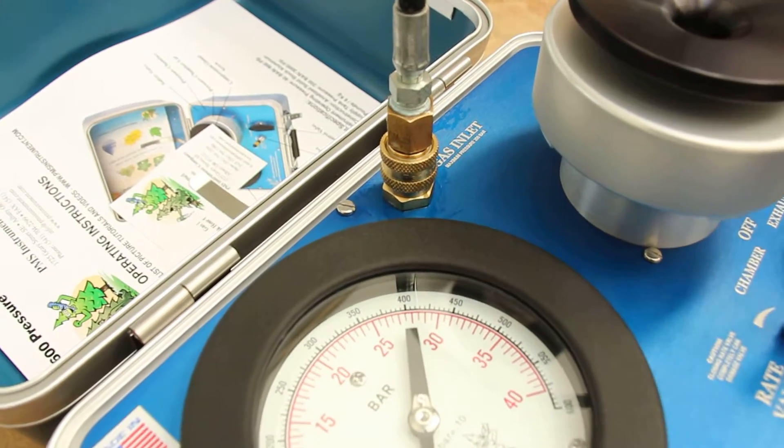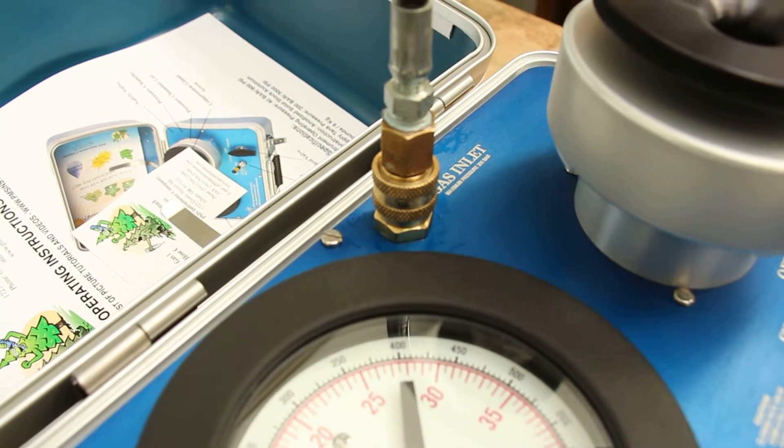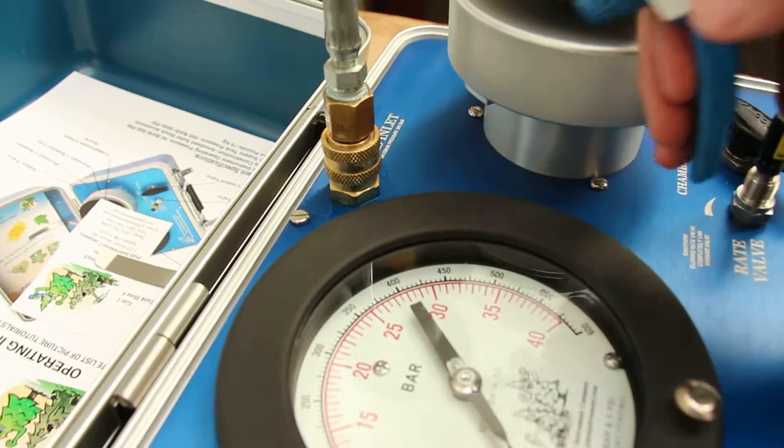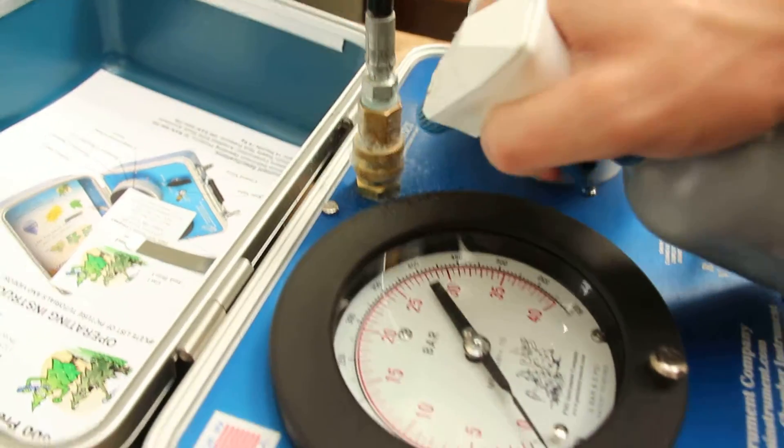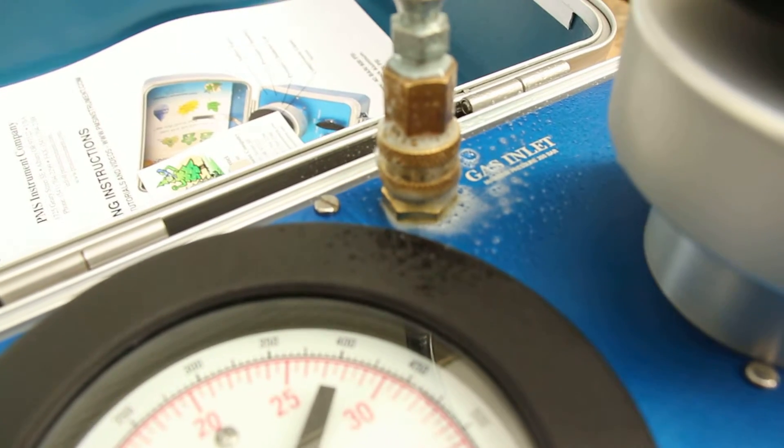How much pressure do we have on it? 2,000. 2,000 pounds there, so you can see now that we've got no bubbling. You can squirt a little more bubble leak detector on there. And you can see perfectly, no bubbles with leaks, leak's been fixed.